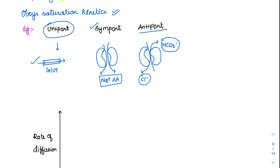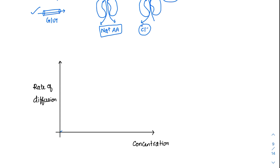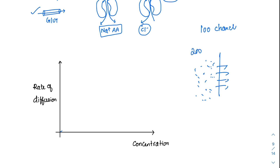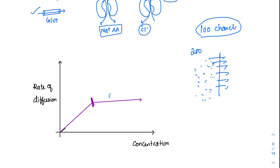When the rate of diffusion is plotted against concentration for facilitated diffusion, saturation occurs. Suppose we have 100 channels: if I have 100 molecules, all 100 move through the 100 channels. But if I increase to 200 molecules, the rate of diffusion cannot increase because there are only 100 channels — only 100 molecules can be transported at the same time. Initially the curve is linear, but after some point it reaches saturation. That is why facilitated diffusion obeys saturation kinetics.